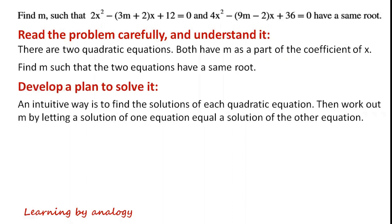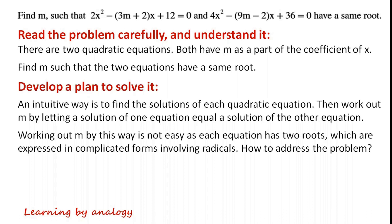An intuitive way is to find the solutions of each quadratic equation, then drop out m by letting the solution of one equation equal the solution of the other equation. Working out m by this way is not easy, as each equation has two roots which are expressed in complicated forms involving radicals. So how to address this problem?